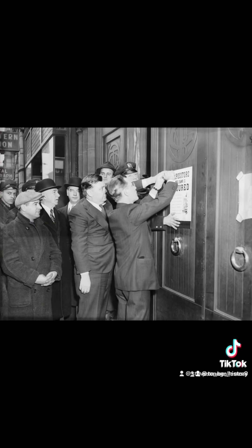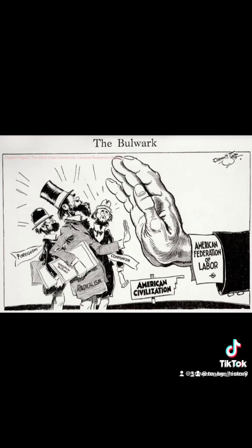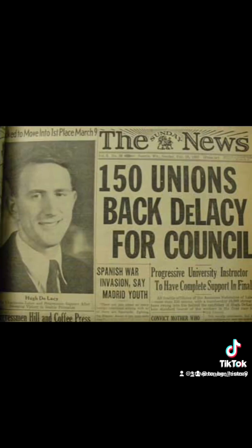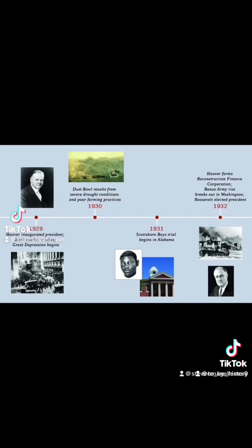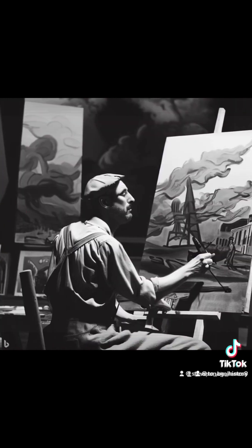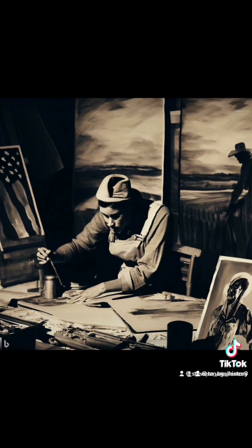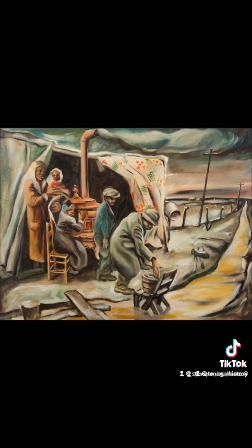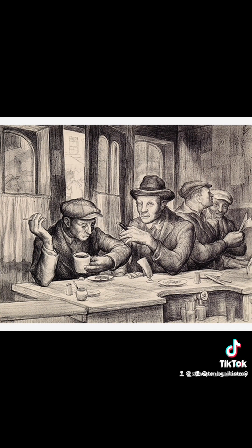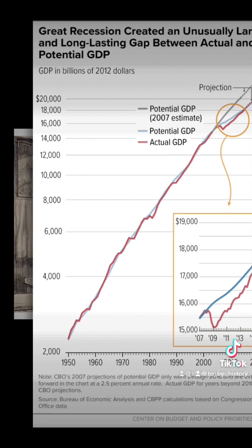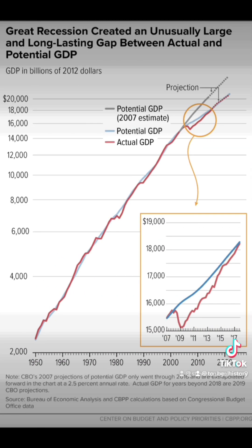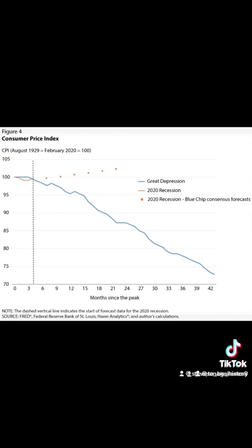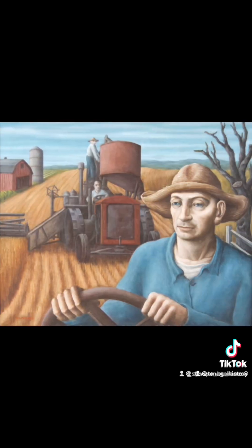The Great Depression also had significant effects on World War II. The economic devastation fueled political instability and provided fertile ground for the rise of authoritarian regimes. In Germany, the economic hardships contributed to the rise of Adolf Hitler and the Nazi Party, who promised economic recovery and nationalistic pride. Similarly, in Japan, the economic crisis led to the militarization of the economy and the pursuit of aggressive expansionist policies in Asia.